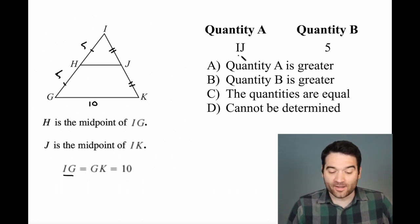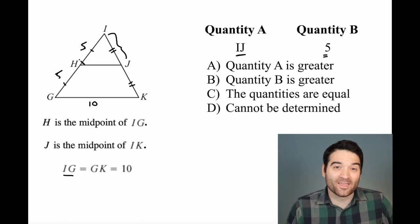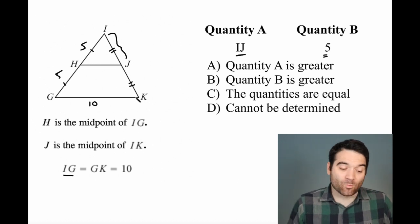The question is, what's greater? Quantity A, IJ, this distance right here, or 5? In other words, is this equal to that? Is IJ equal to IH? Well, we don't know, and here's why.